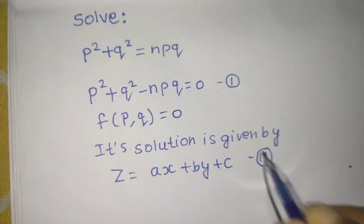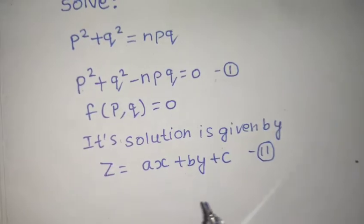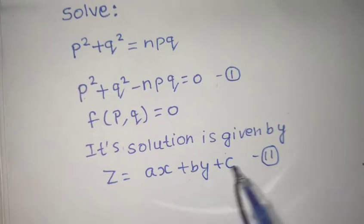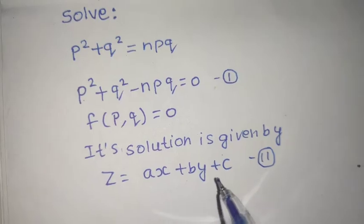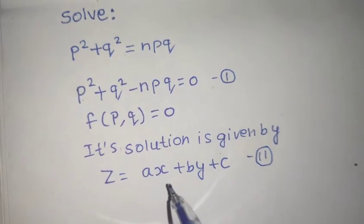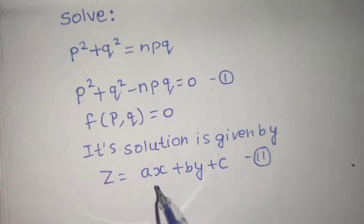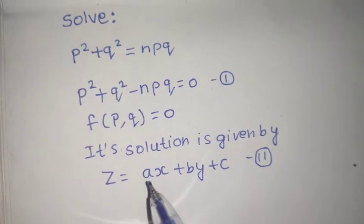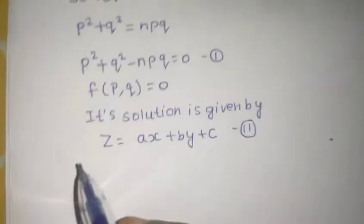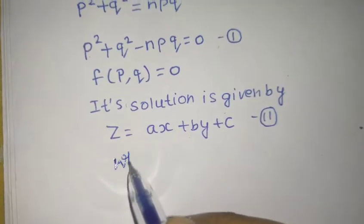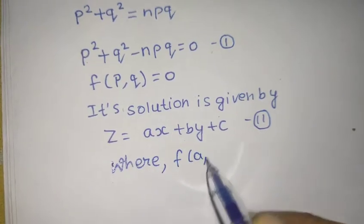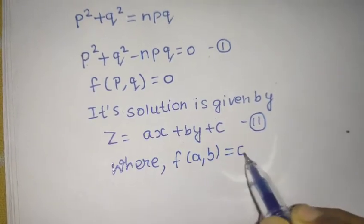Its solution is given by Z equals to AX plus BY plus C. Mark this as equation number 2. But we do one thing. We have three constants right now, but we always write our final answer in terms of two constants only. So, we will either replace A in terms of B or B in terms of A. For that, we have a relation which is F of A comma B equals to 0.